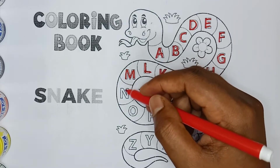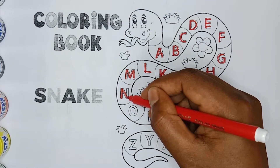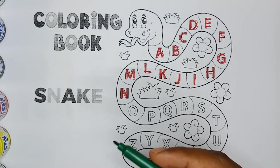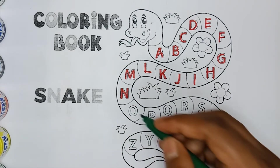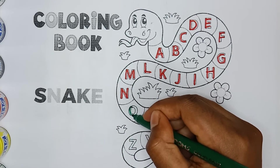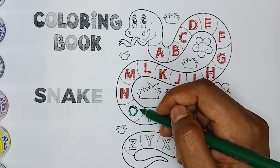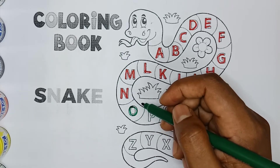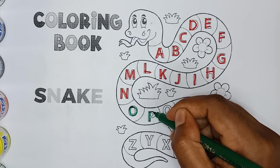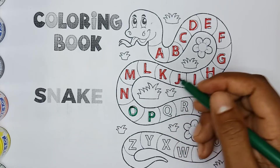N, N for nest, red color N. O, O for orange, green color O. P, P for pen, green color P.